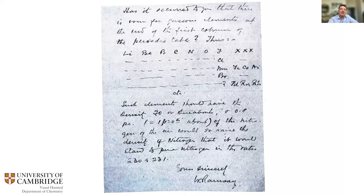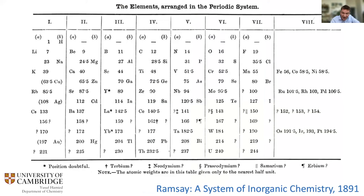Ramsay soon discovered the whole series of noble gas elements by fractional distillation of liquid air. But where should they go in the periodic table? Initially, when argon was first discovered, Ramsay thought it might be a mixture of three gases with similar masses. From a periodic table in his 1891 textbook, he thought these could go after fluorine, in Mendeleev's group eight above iron, cobalt, and nickel.